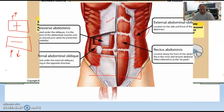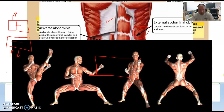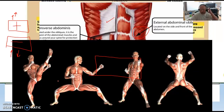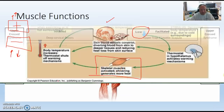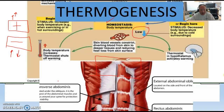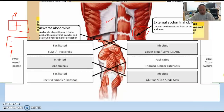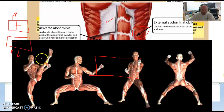The third function is protection. Looking at the abdominal muscles — there are quite a few layers — muscles offer protection to our organs. The fourth function is movement. So far: posture, thermogenesis, protection of organs, and movement.